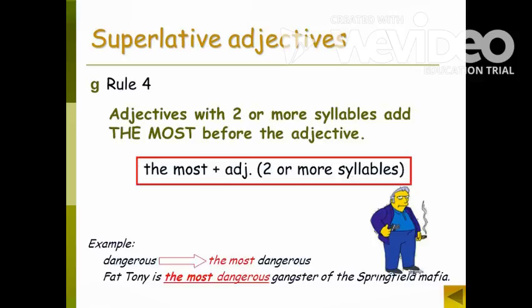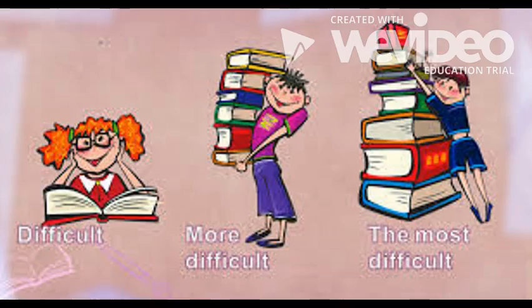Superlative adjectives: the rule for adjectives with two or more syllables uses the word 'most'. Use 'the most' plus the adjective for two or more syllables. For example: dangerous — the most dangerous; difficult — more difficult — the most difficult.